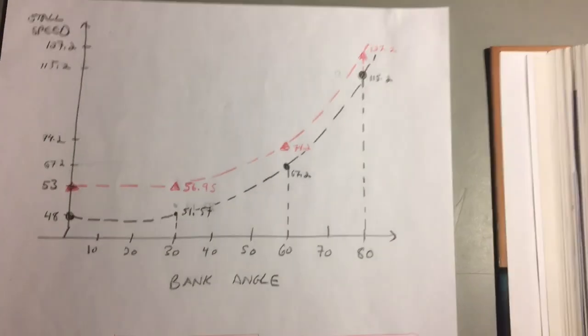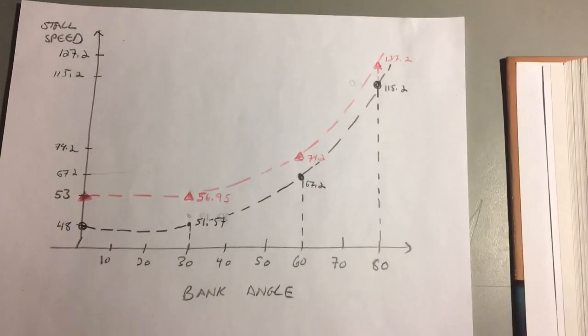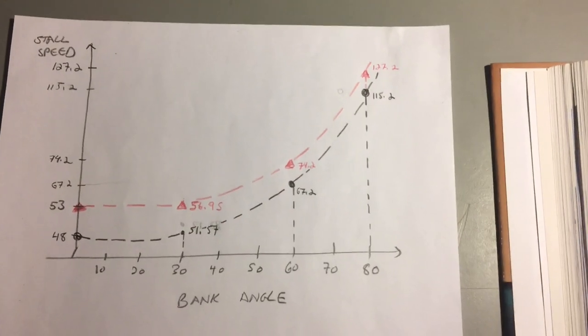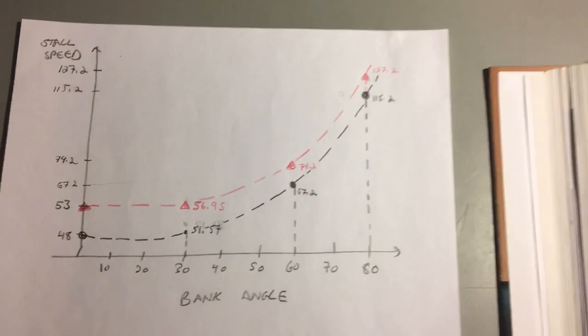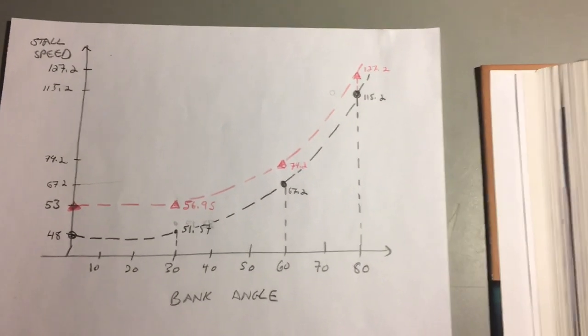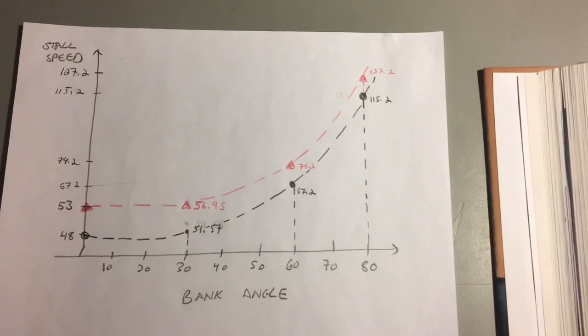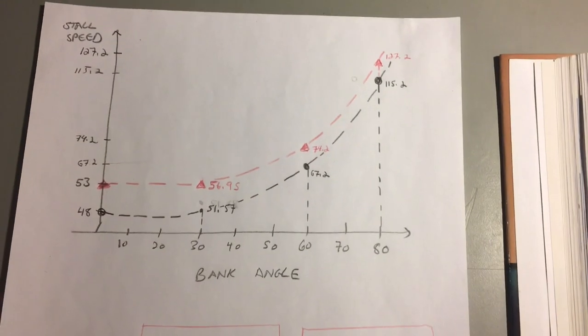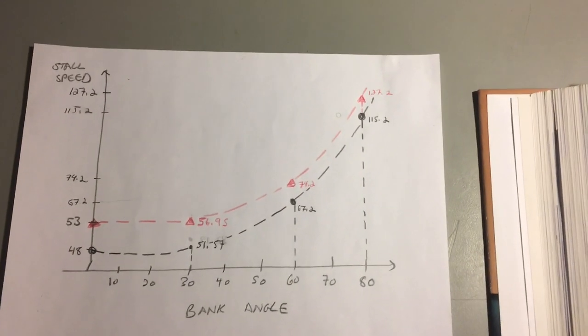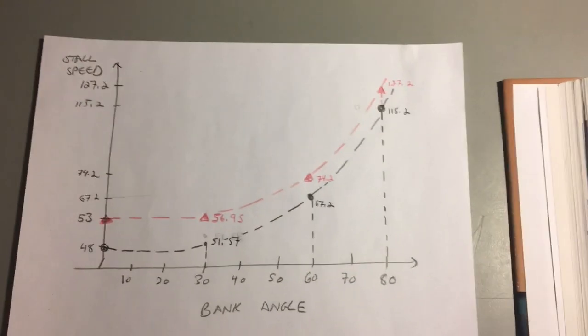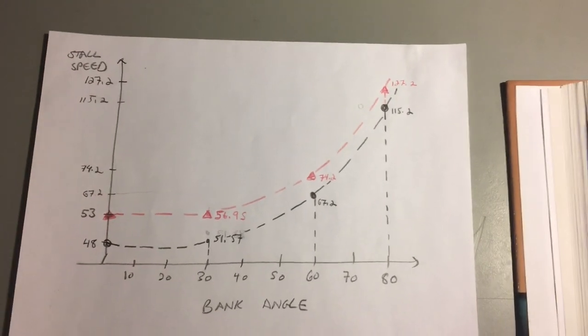What I want you to take away from this graph is that you could in theory fly the pattern at an 80 degree bank angle if you were flying above 115 knots. You wouldn't stall, you wouldn't spin. It's a function of being coordinated and knowing where you are on this curve.